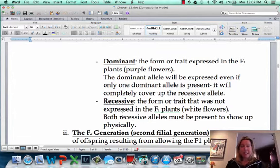The one that did not get expressed in that first generation, in that case the white flower, that's called the recessive allele. For a recessive trait to show up, they both have to be there. It has to be two recessive alleles to show the recessive trait.